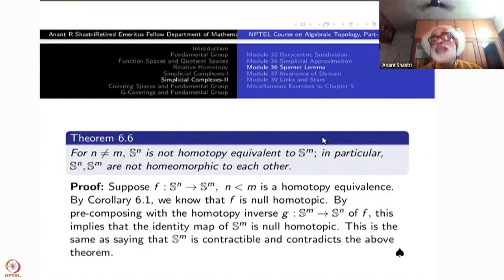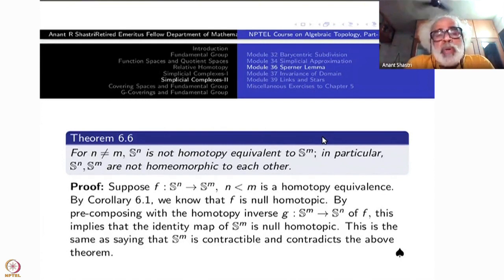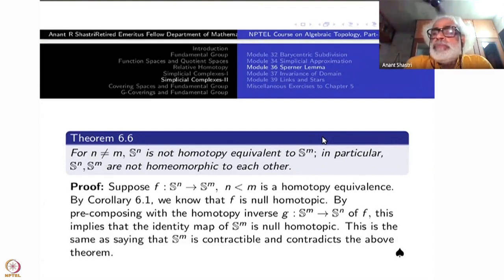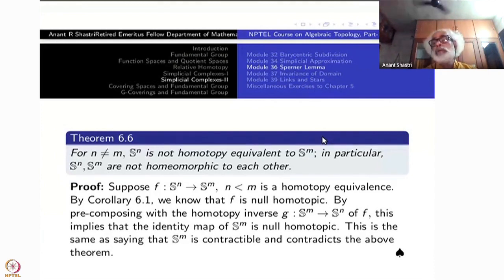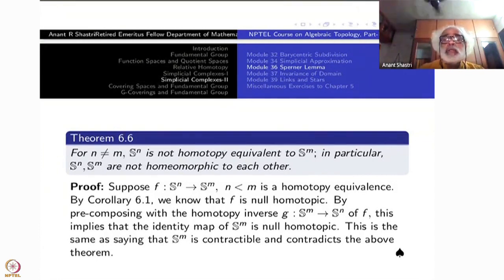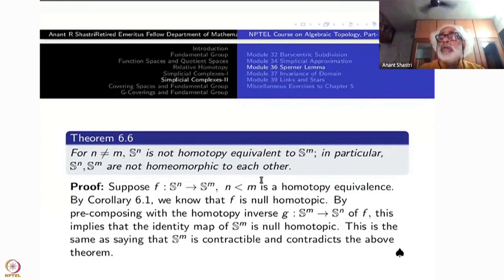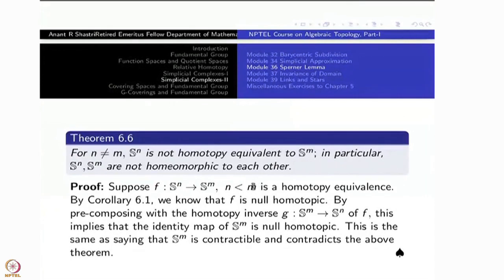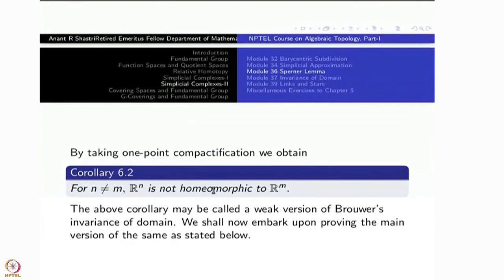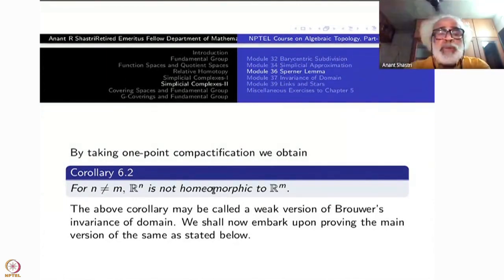When this was proved it was a very great landmark result. Brouwer proved it through his invention of homology theory, though he also had different proofs. There are proofs via dimension theory which are much more complicated. Nowadays homology theory gives the standard proof; here we have obtained it by just simplicial approximation and Sperner's Lemma.